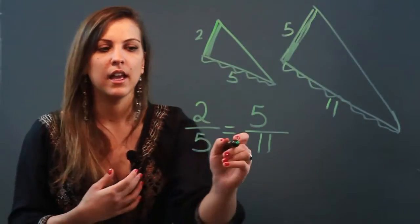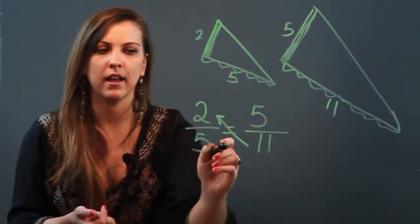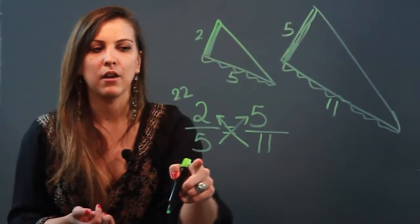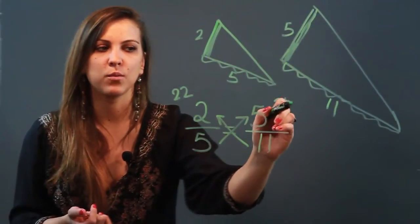And the easiest way to tell is to go ahead and cross multiply and see what my products are. So 11 times 2 is 22 and 5 times 5 is 25.